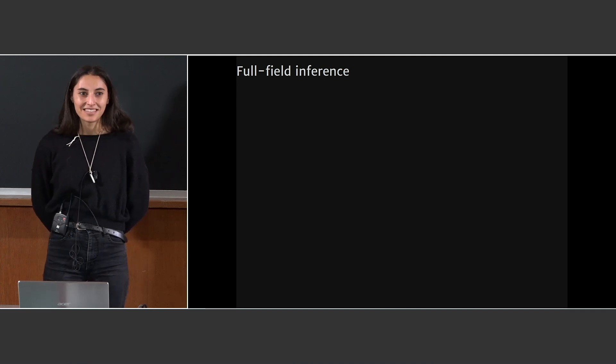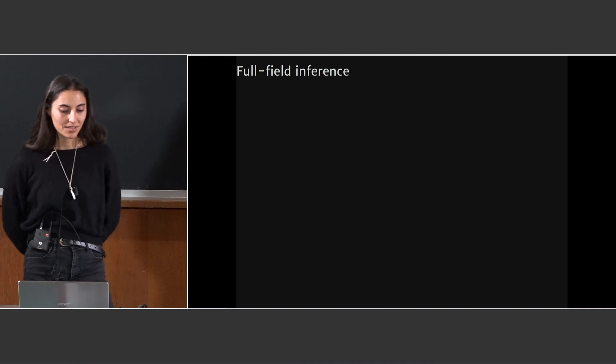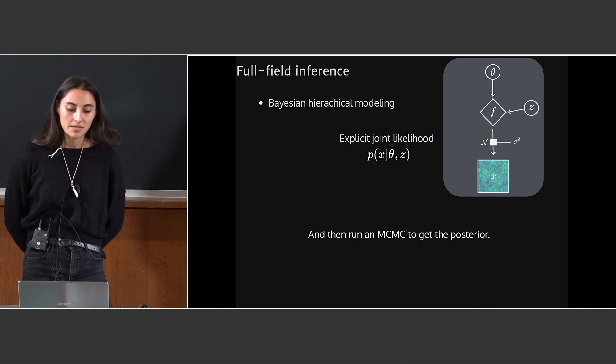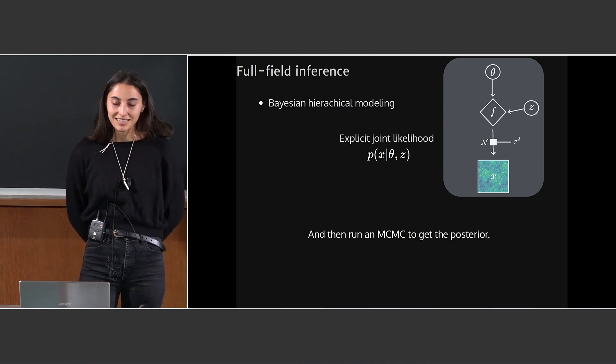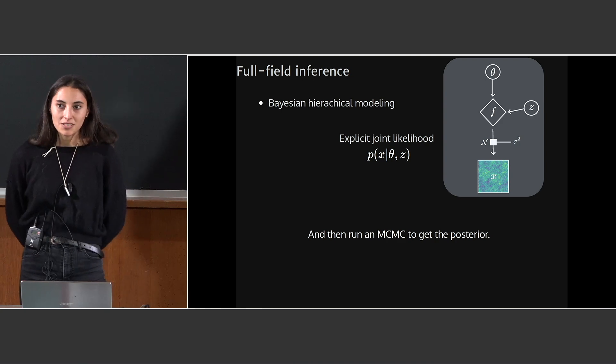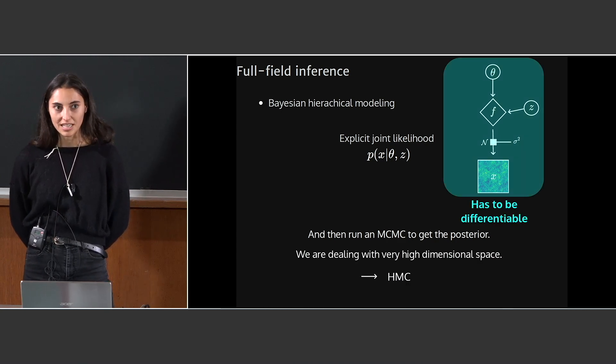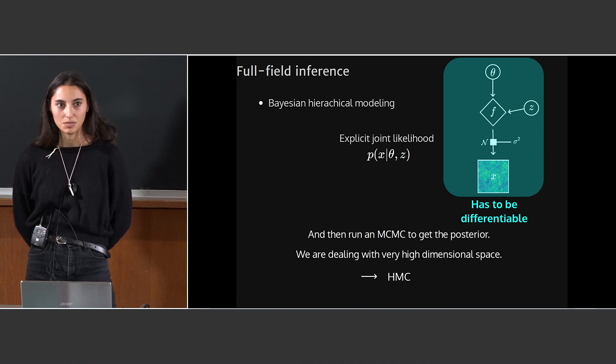There are two ways to do full field inference. You can either build the Bayesian hierarchical model, then run MCMC and get the posterior at the end. Since the parameter space is very high dimensional, we usually use HMC, meaning that your BayHM has to be differentiable.